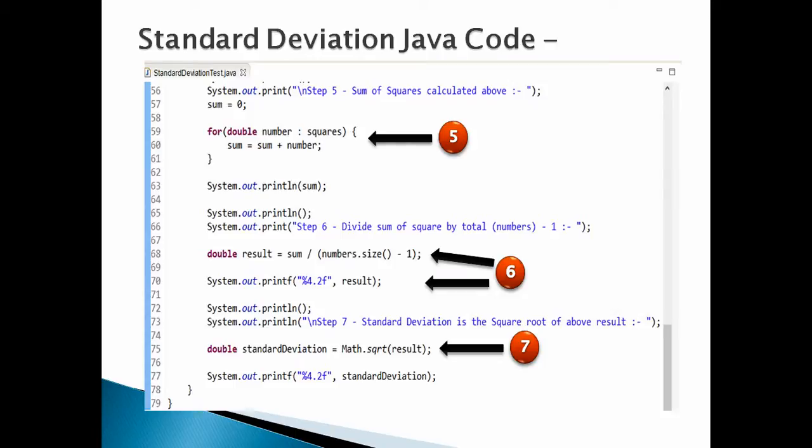Step 5: after taking squares, take sum of the squares numbers calculated above. Iterate over list of squares, take sum of each element in list of squares. In our case, sum of squares is 6283.6. Moving ahead.